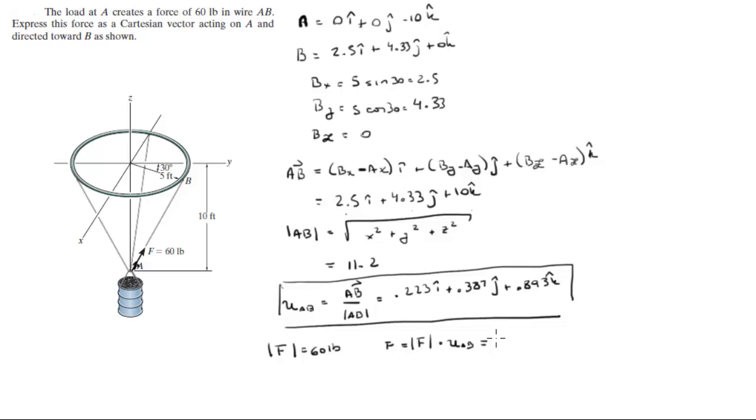And it's going to be equal to 13.38i plus 23.22j plus 53.6k. So this is the final answer.